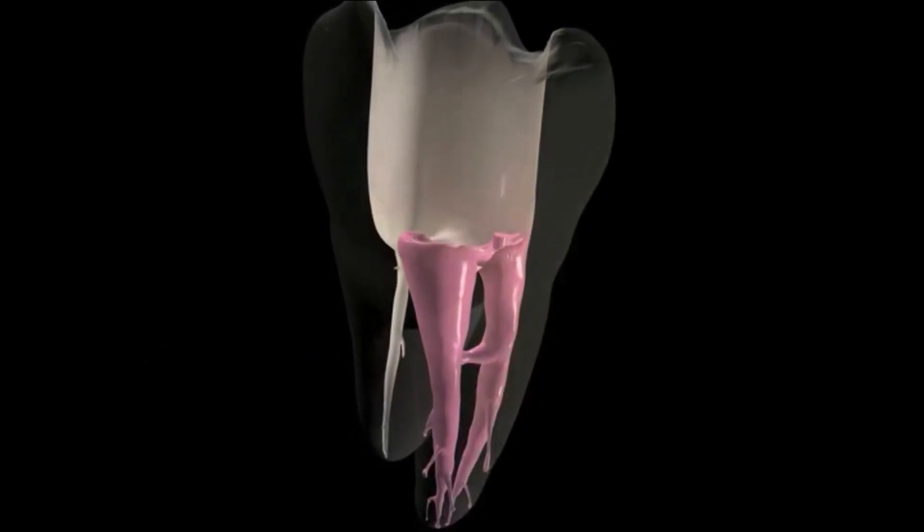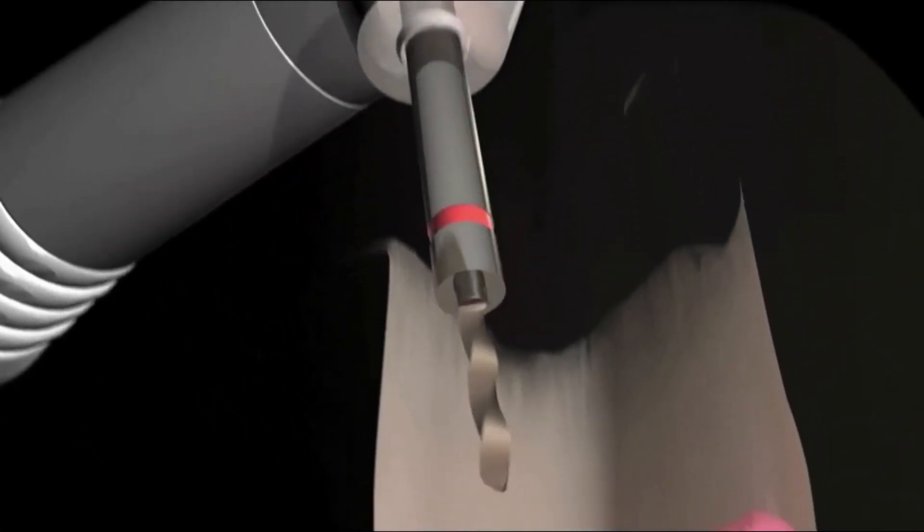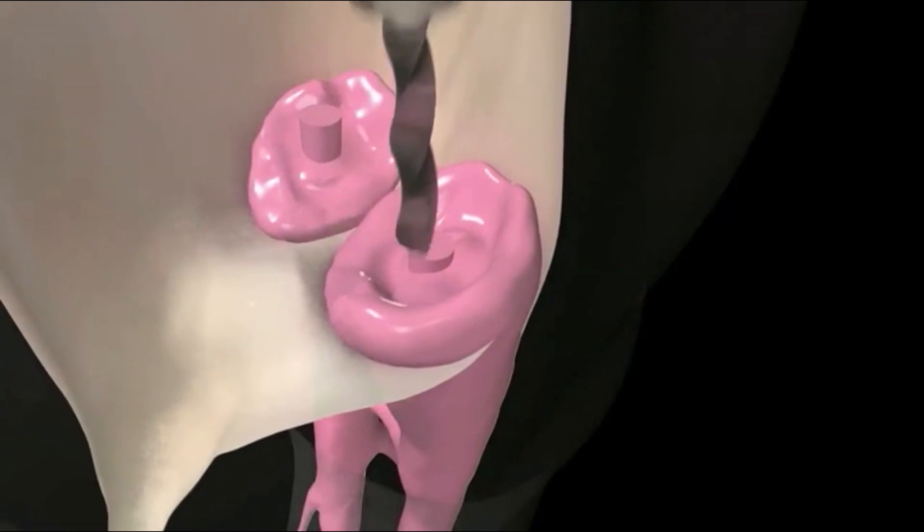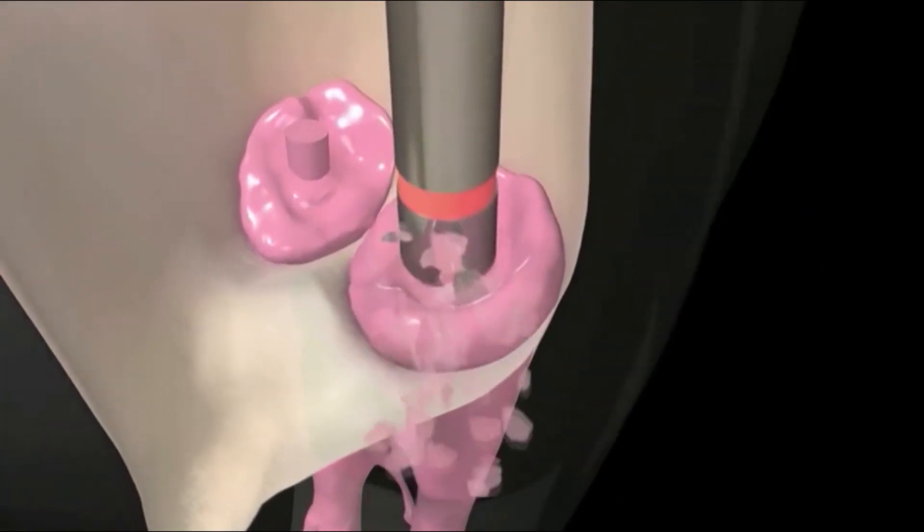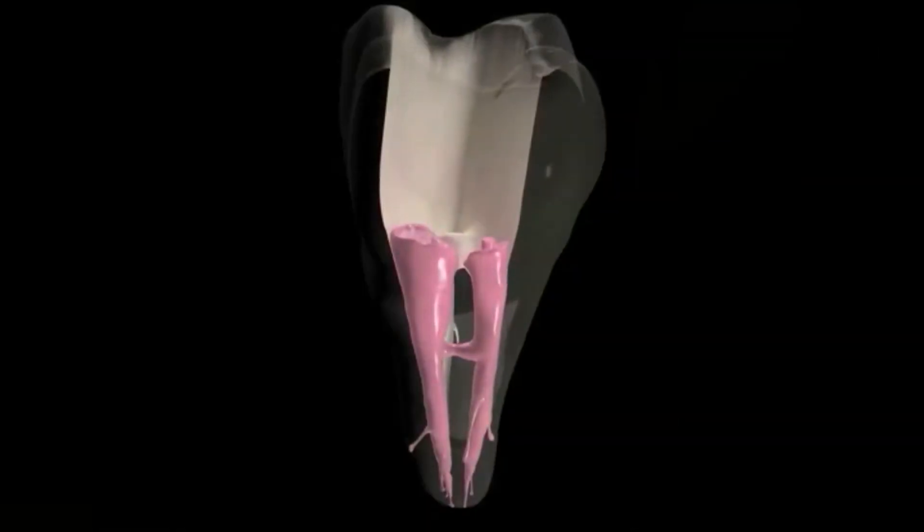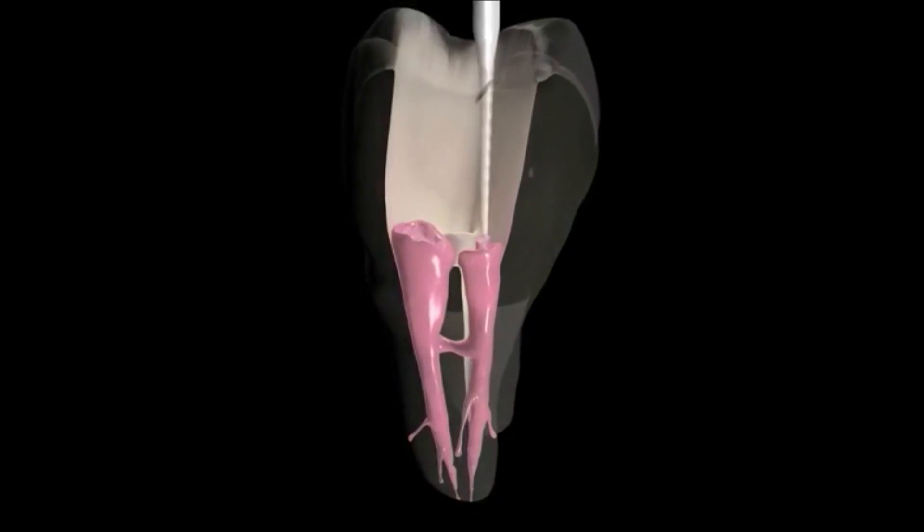GuttaCore obturators remove easily, like Gutta-percha, because they are Gutta-percha through and through. You'll see the familiar shredding characteristic, whether you're creating post-space or retreating.